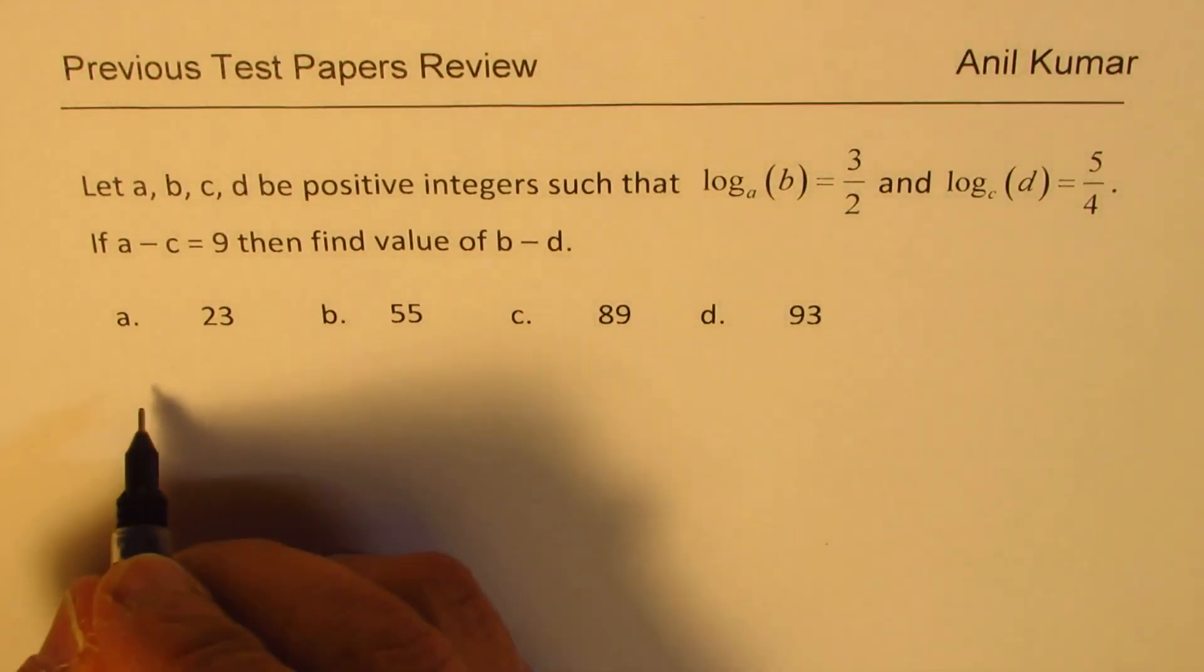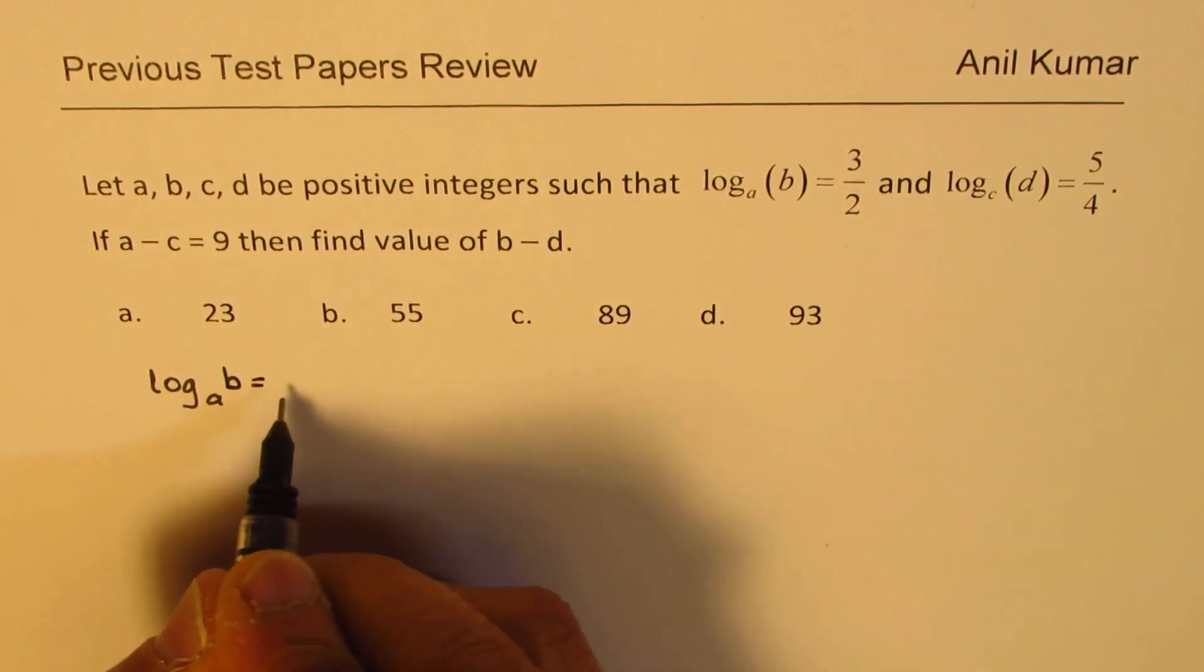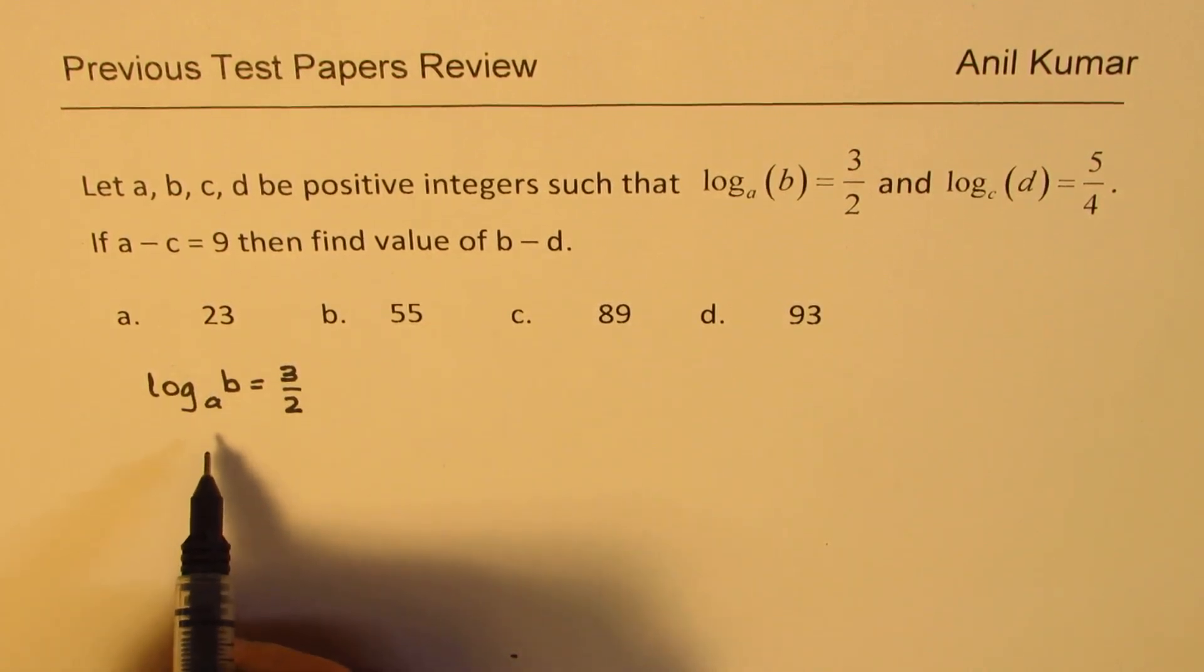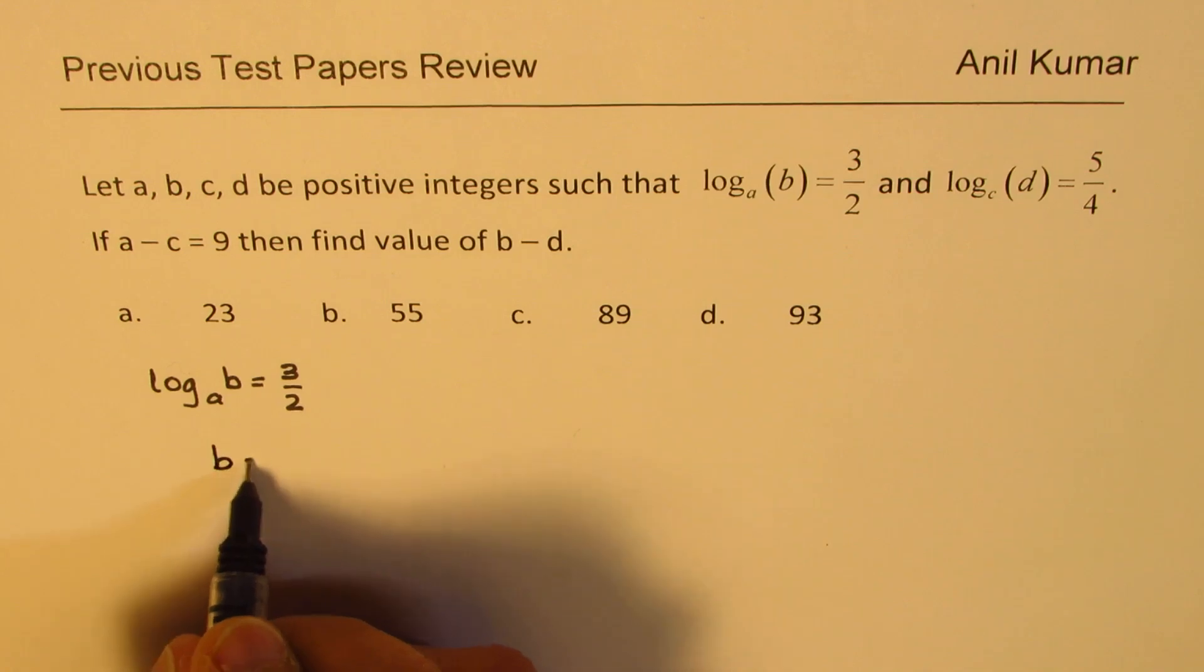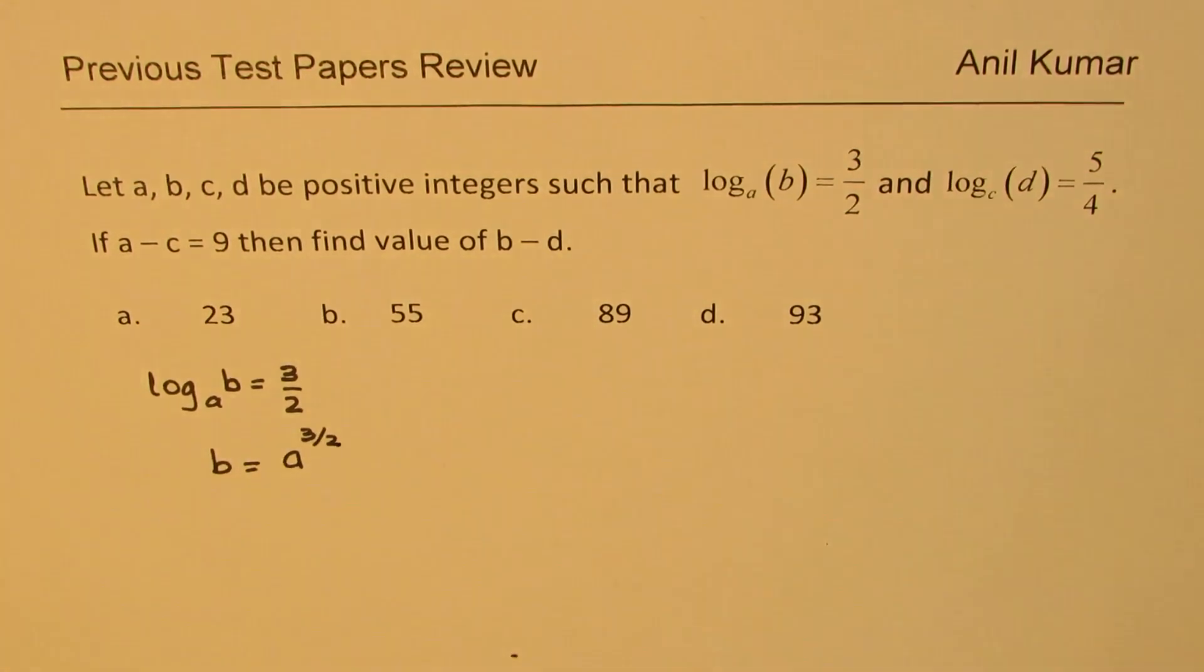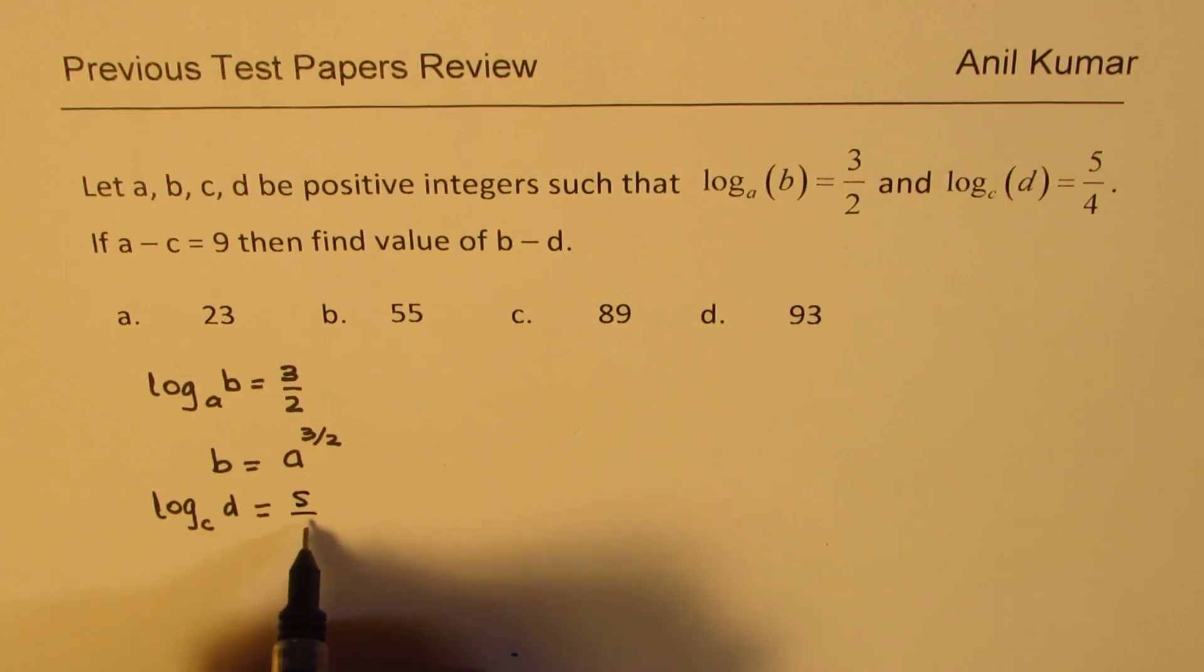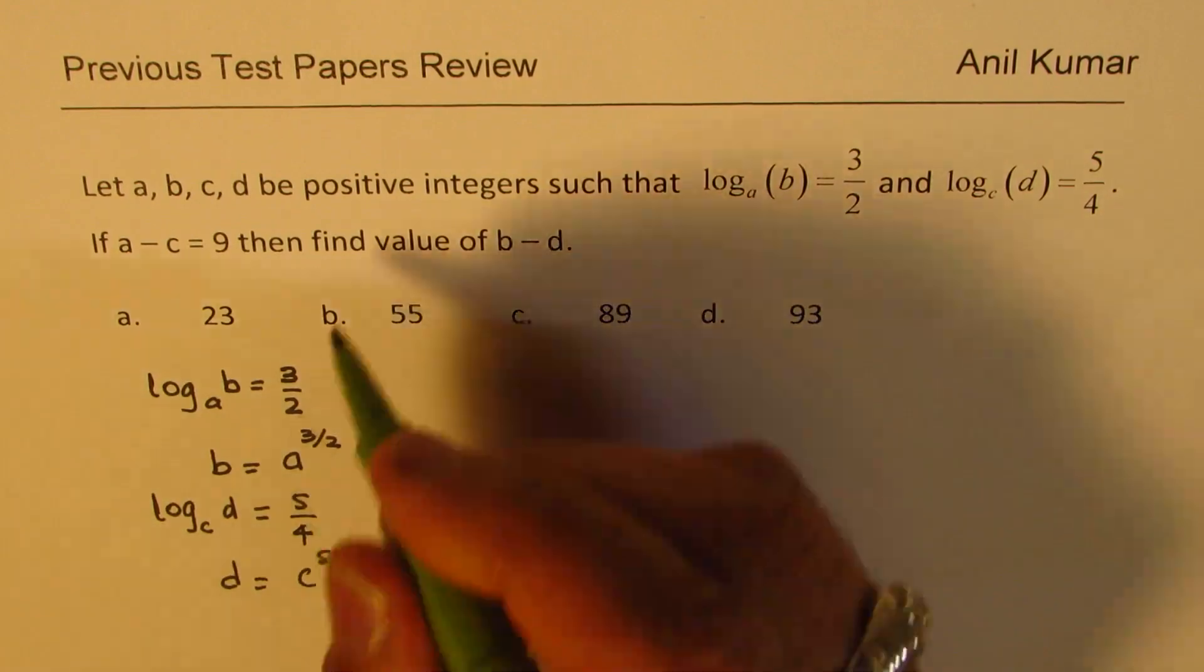So what we are given here is log to the base A of B is 3 over 2. Now you can write this equation in exponential form so you can write B equals A to the power of 3 by 2. You're also given that log to the base C of D is 5 over 4. So D equals C to the power of 5 over 4.